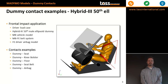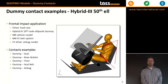The Madimo frontal impact application file shows examples of dummy contact definitions in practice. In the example, there are contacts defined between dummy and seat, dummy and the knee bolster, dummy and the floor, dummy and the seat belt, and dummy and the airbag. The dummy is a multi-body dummy and the environment is largely ellipsoids, although there is a FE-MB belt system and an FE driver airbag model.